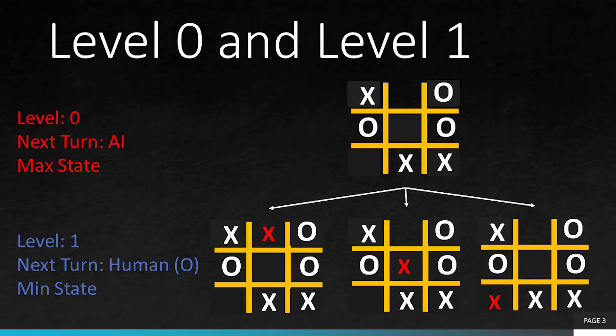So ideally, we can stop here and choose one of these paths and the AI can win. Still, the beauty of the Minimax algorithm is the fact that it makes sure that it never loses.